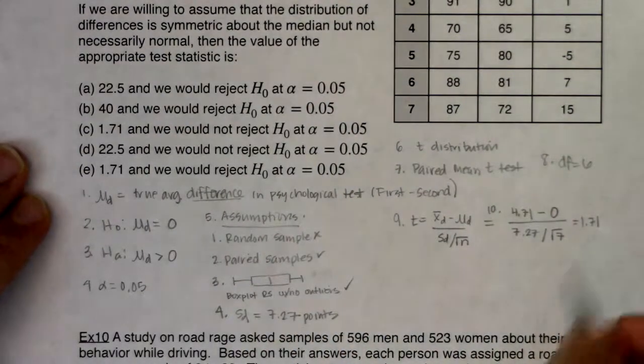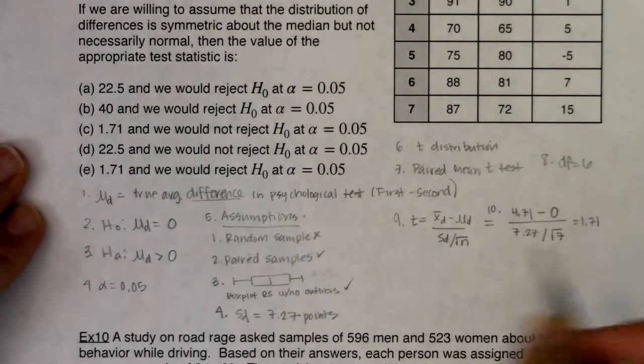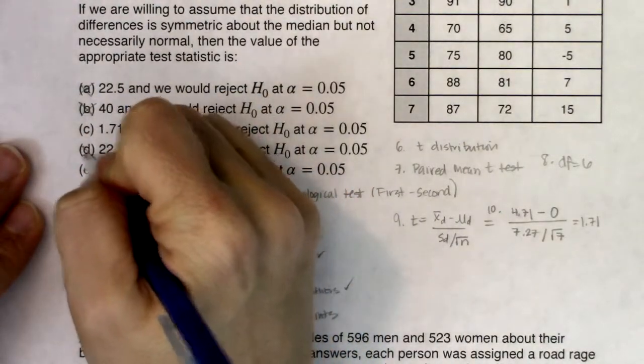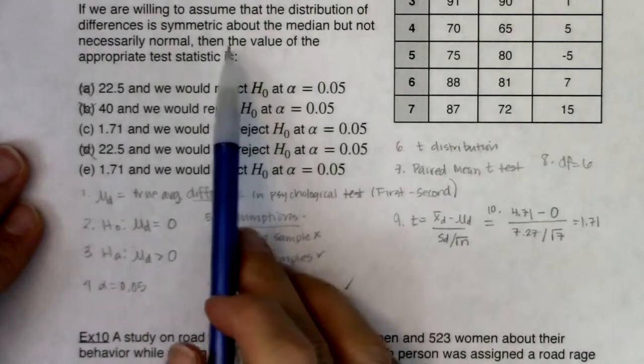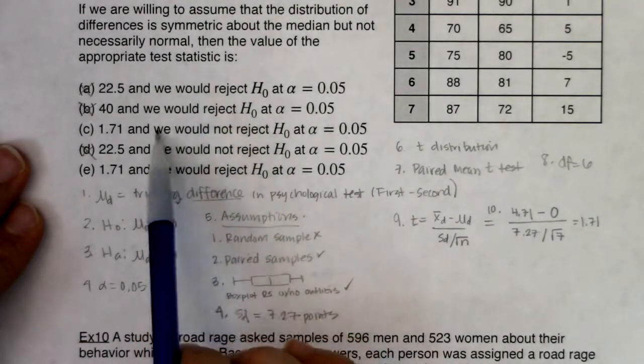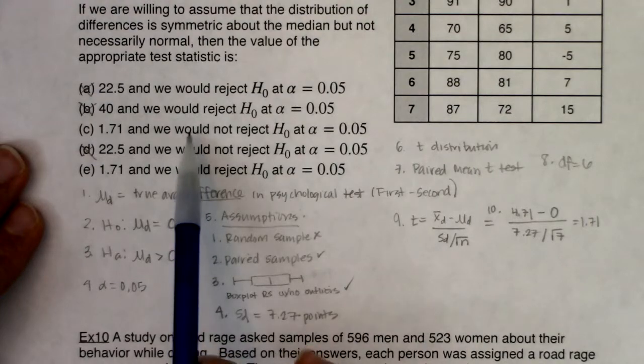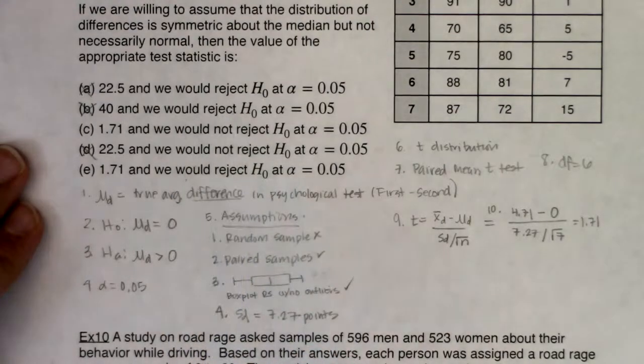As soon as I see 1.71 from my test statistic, I know A is gone, I know B is gone, and I know D is gone. Because it's asking me for my test statistic and then what we're going to ultimately do. Am I going to reject or fail to reject? So is this fail to reject or do we reject? Let's see what the P value was.